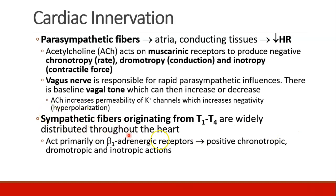The heart also has sympathetic fibers. They originate from the T1 to T4 nerve roots of the spine, are distributed throughout the heart, and act mostly on the beta-1 adrenergic receptors. They have positive chronotropic, dromotropic, and inotropic actions. So there are multiple ways the heart can change the way it conducts electrical signals, depending on the clinical need.